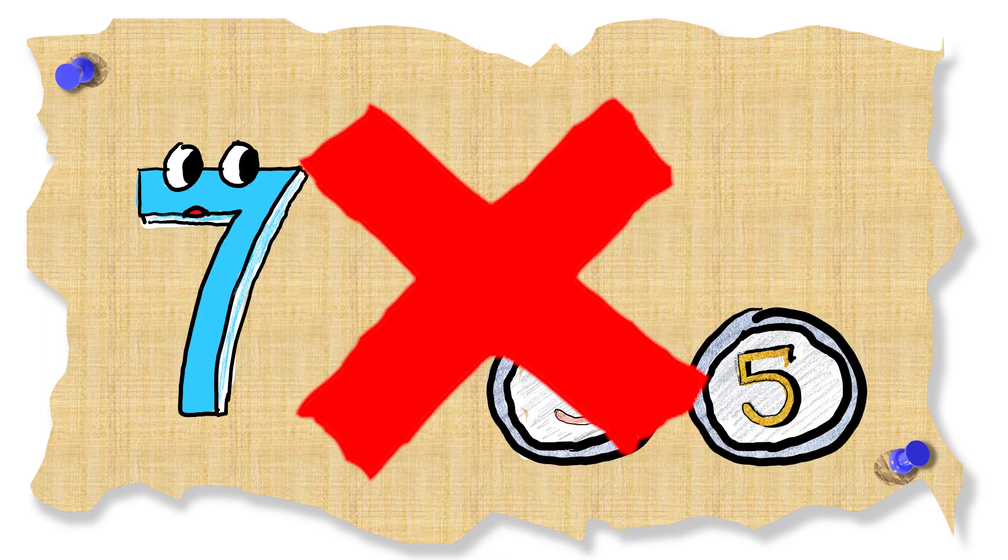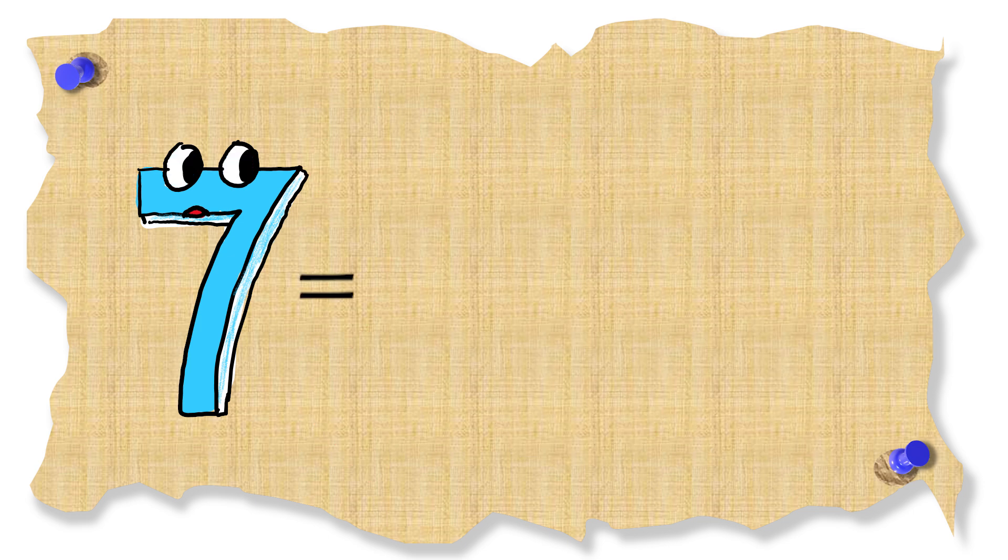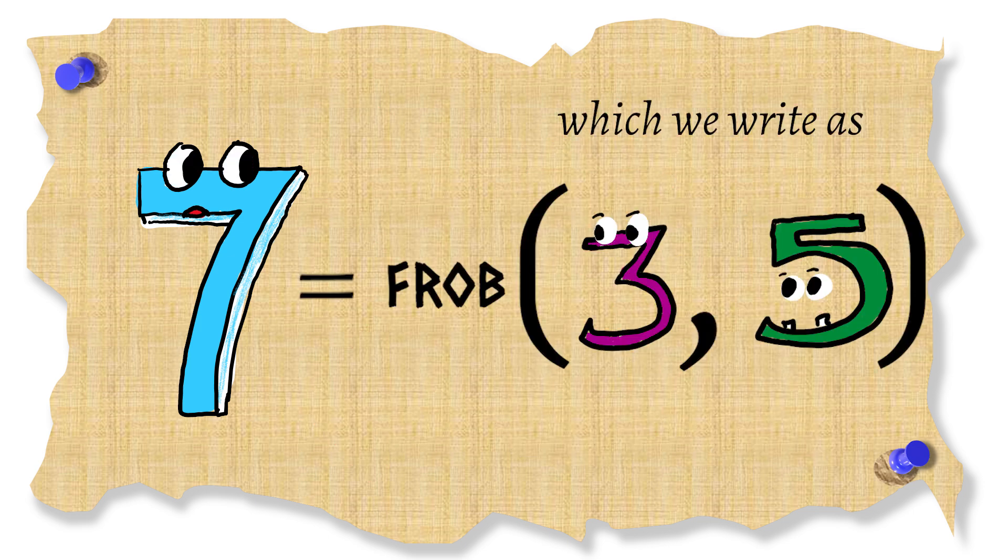In our example I can't make seven and we will see that this is the largest number I cannot make. So in this case we will call seven the Frobenius number of three and five.